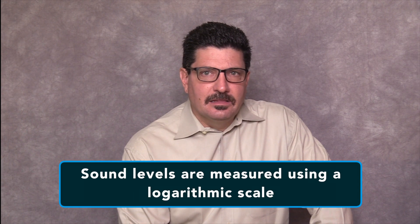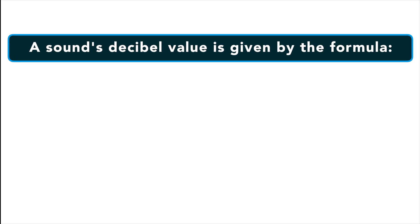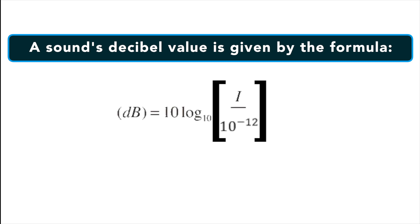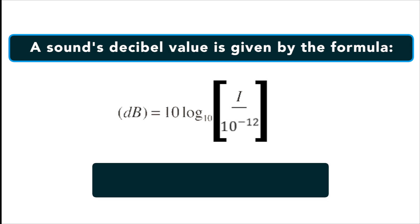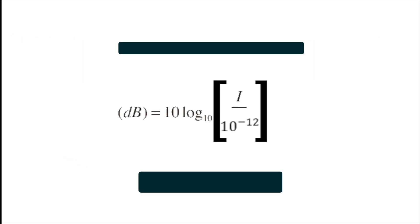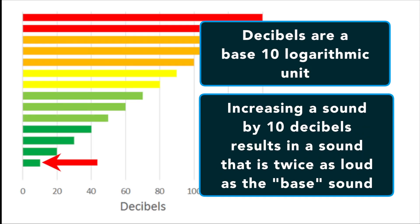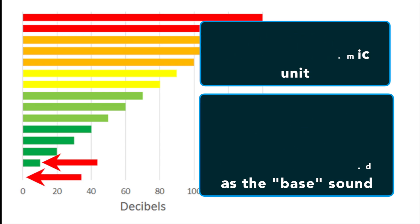We measure sound levels using a logarithmic scale, which can be confusing if you're not great at math. A sound's decibel value is given by the formula: 10 log₁₀ times I over 10 to the minus 12, where I represents the sound's intensity in watts per square meter. Decibels are a base-10 logarithmic unit, which means that increasing a sound by 10 decibels results in a sound that is twice as loud as the base sound.